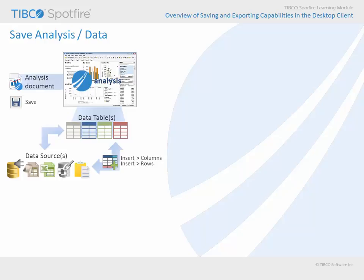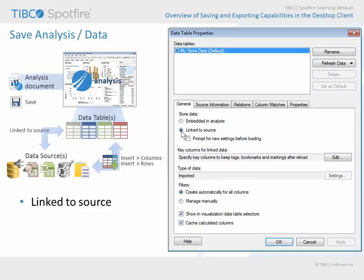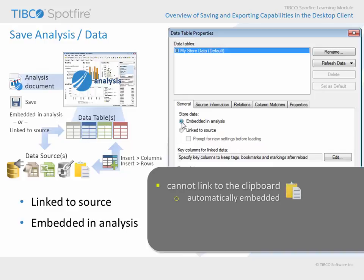For many data sources, the path to that data source or data sources is all that is saved within the analysis document by default. However, the data table properties dialog provides the option to leave each data table linked to the source, or you may elect to embed a data table within the analysis document, thereby making the data source layer no longer necessary, and creating an analysis document which can stand alone and be shared with others without concern for their ability to access the data. The two store data options in this dialog may not be available if you copied and pasted the data from the clipboard, or if you created a connection to an in-database data source and elected to keep the data external.